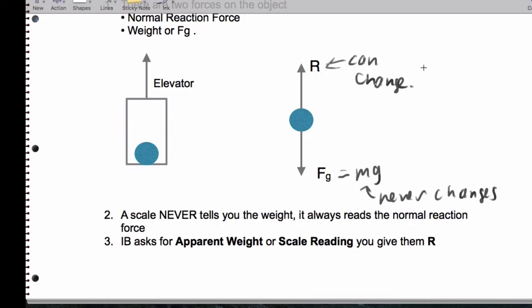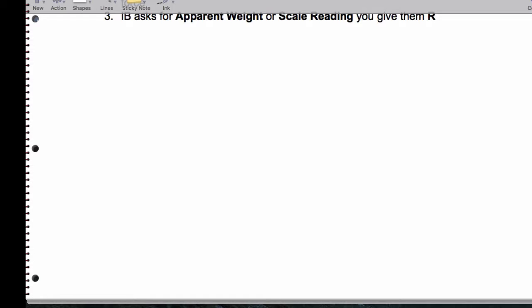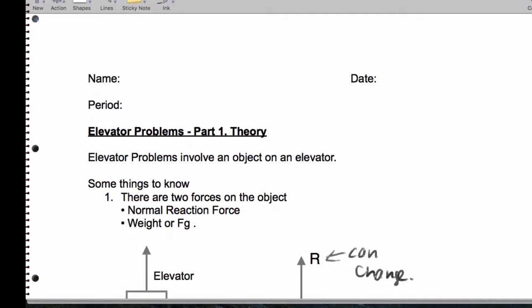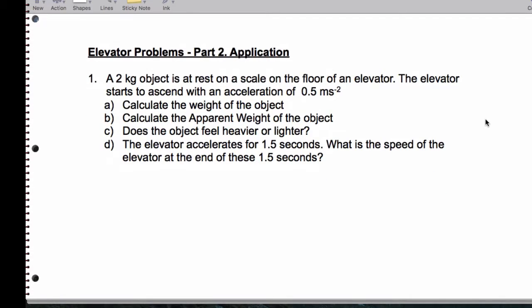So what we're going to do is look at the elevator problems that we did in class. And I'll actually also take a look at the homework. So, this is the standard problem. We have a two kilogram object at rest on a scale on the elevator floor. The elevator starts to ascend with this acceleration. We want the weight, the apparent weight.